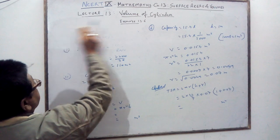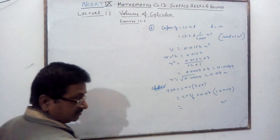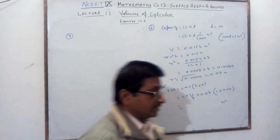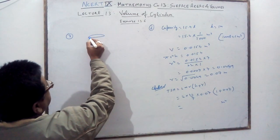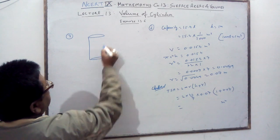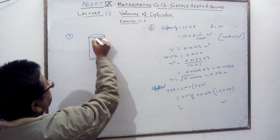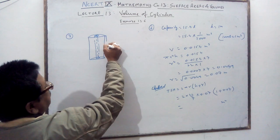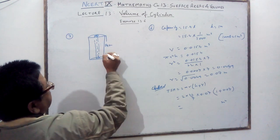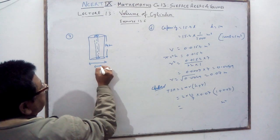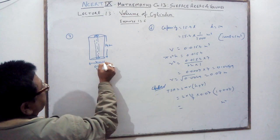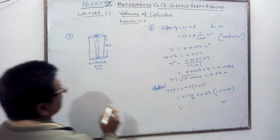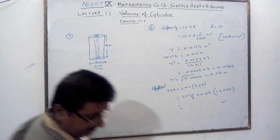Question Number 7: a pencil is given. It has a lid and is 14 centimeters in length. There are two diameters given — one for the pencil and one for the graphite. You need to find the volume of wood as well as the volume of graphite.